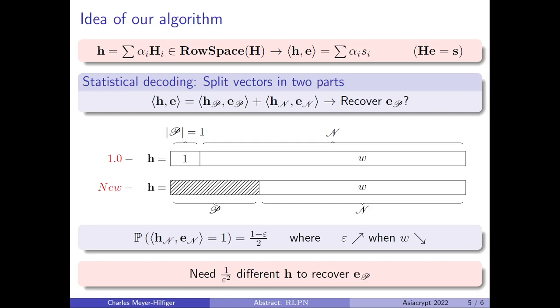In statistical decoding 1.0, we take P of size 1. Thus, we want to recover only one coordinate. And we compute h belonging to the row space of the matrix H, so that h is of weight W on N. We can compute the probability that h_N dot product e_N is equal to 0, say it is equal to 1 minus epsilon over 2, where epsilon is a function of W. Information theory tells us that we need 1 over epsilon squared different h in order to be able to recover e_P.